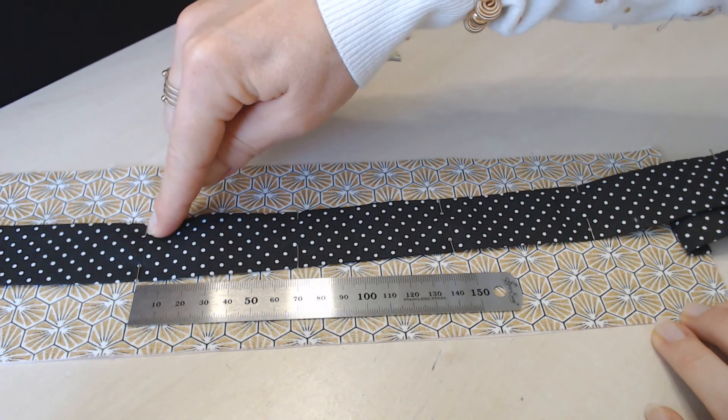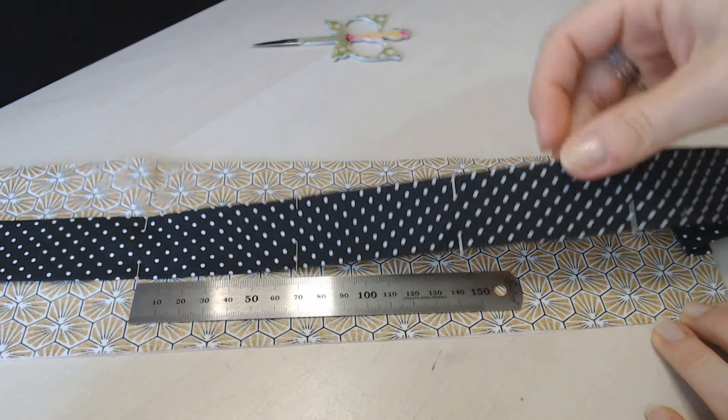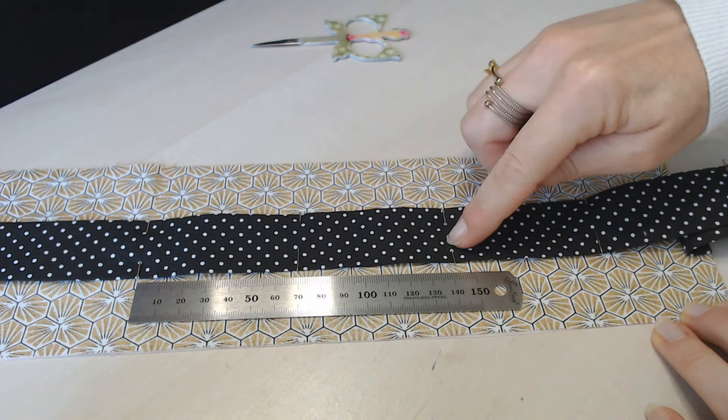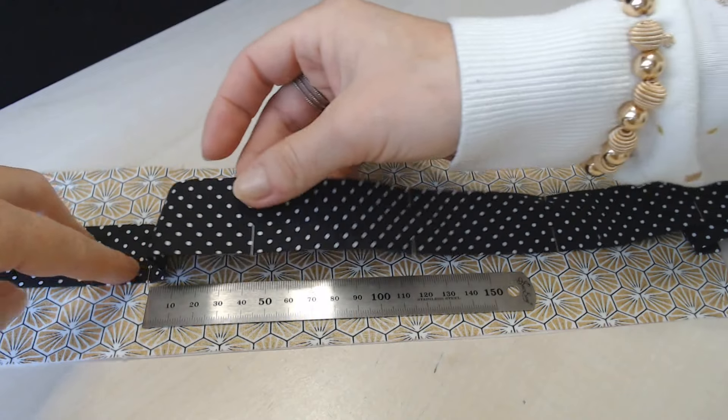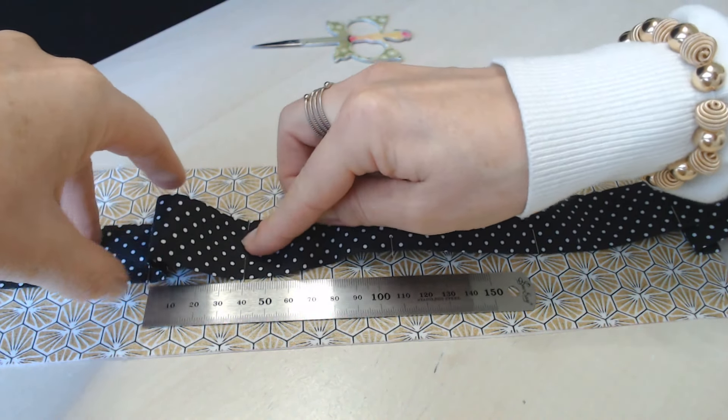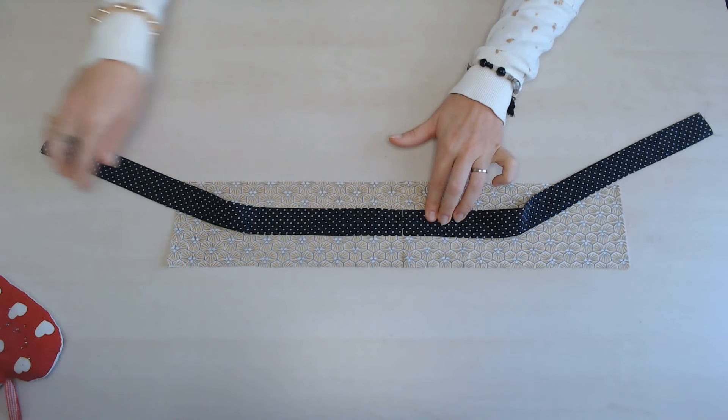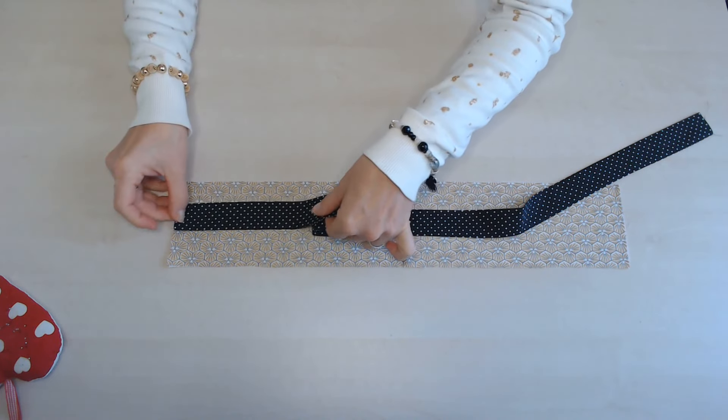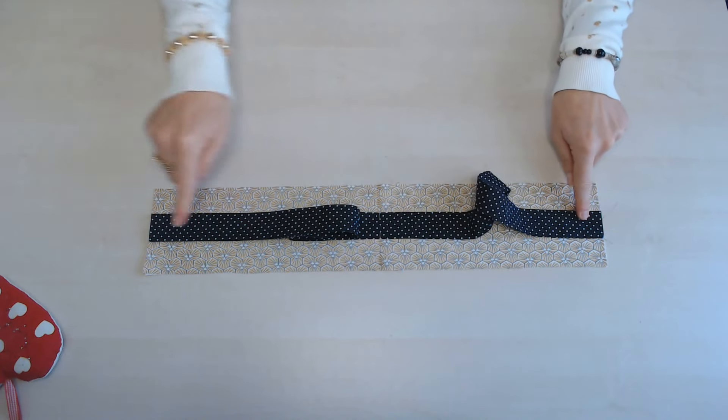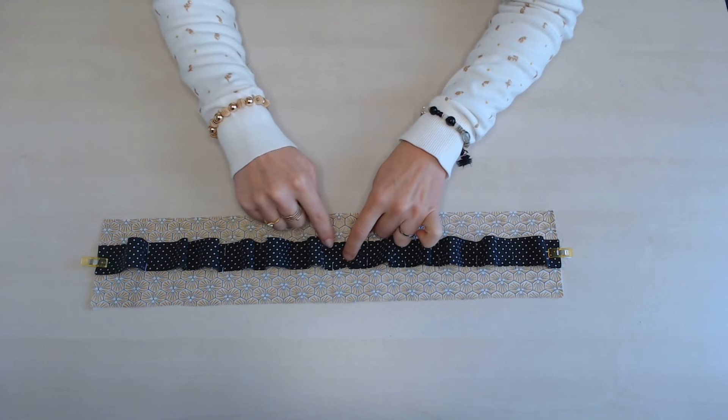A partir de l'épingle du milieu, on vient placer des épingles uniquement sur la bande ici, tous les 7 cm. Et on vient ensuite épingler notre bande sur celle-ci, tous les 4 cm pour former ceci. Je l'épingle et je vais épingler également les extrémités de chaque côté. Et il faut faire une piqûre à l'emplacement de chaque épingle.